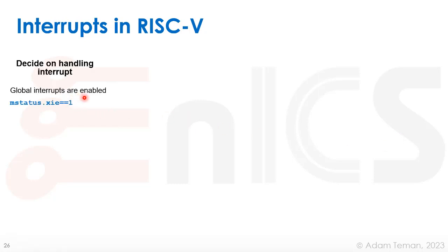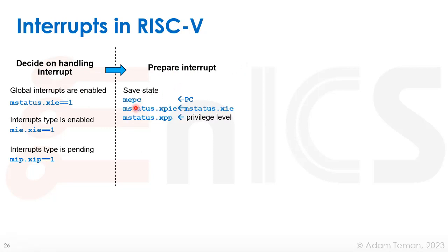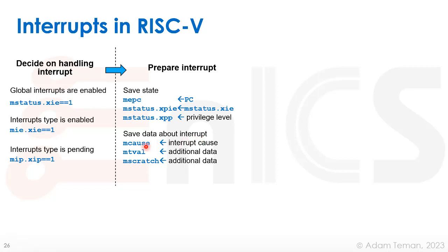Looking at the interrupt handling flow graphically: first, we check that global interrupts are enabled via mstatus.xIE — uIE, mIE, or sIE. If set to 1, global interrupts are enabled. Then we check mie to see if this type of interrupt is enabled, and check mip to see if an interrupt of that type is pending. Once confirmed, we prepare: mepc saves the current PC so we can return; mstatus xPIE saves the previous interrupt-enable state; xPP stores the previous privilege level; and mcause, mtval, and mscratch save data about the interrupt for the handler.